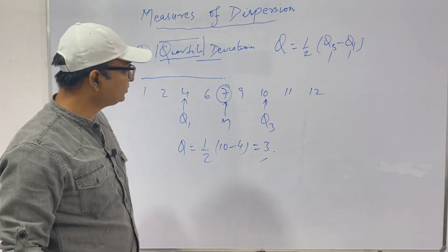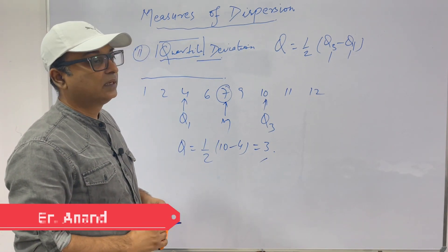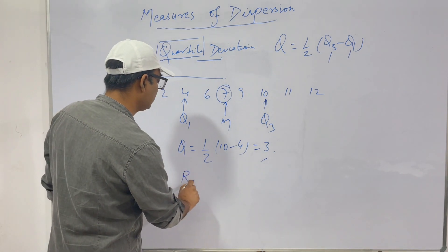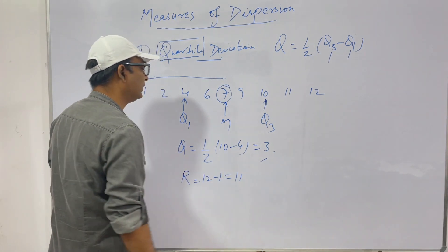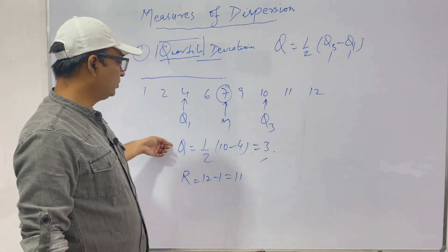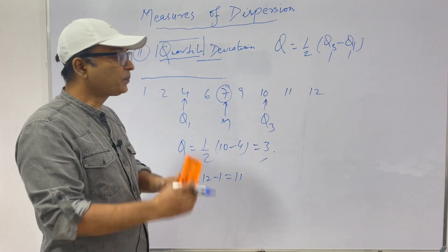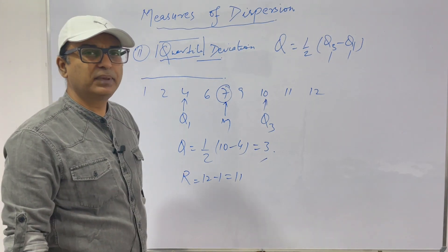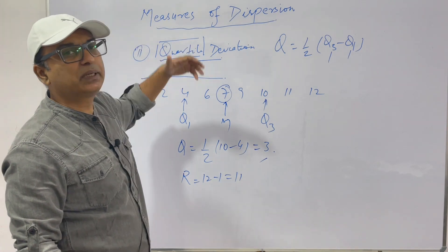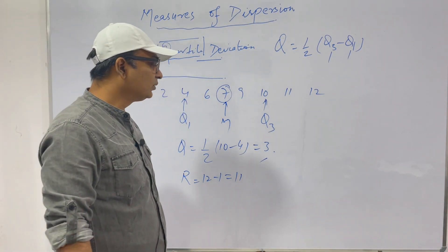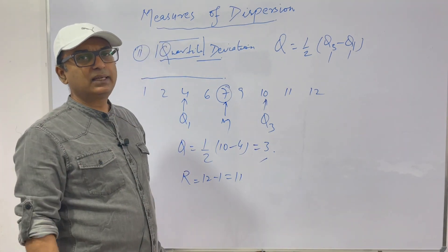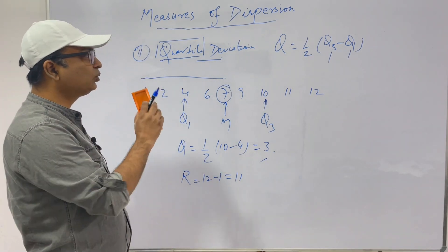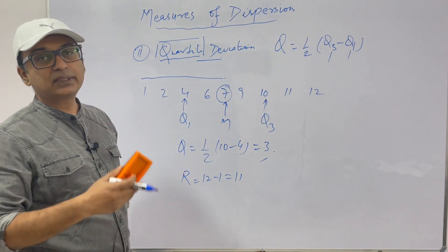The quartile deviation is 3, which gives an idea of the scatteredness of the data. For comparison, the range of this distribution is 12 − 1 = 11. So we have narrowed down the measure from 11 to 3. Range and quartile deviation are simple methods, but they are not very reliable for sophisticated mathematical analysis. Quartile deviation is somewhat better than range, but for serious analysis we use mean deviation and standard deviation. These simpler methods help us build up to those.